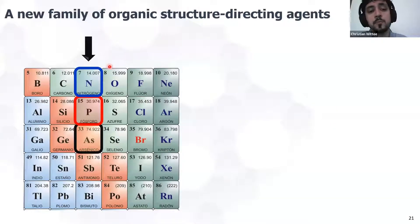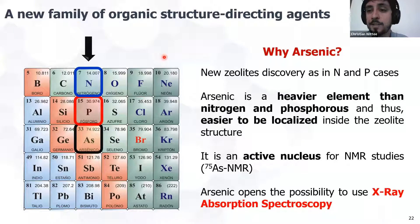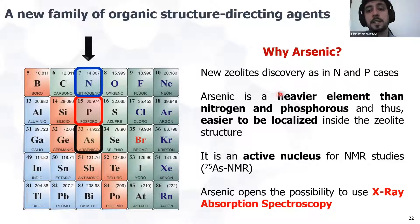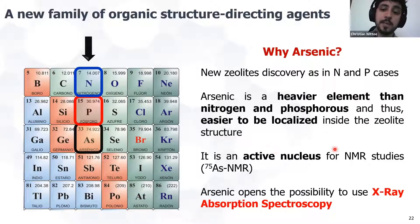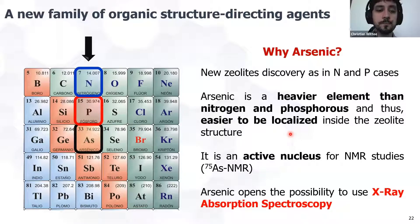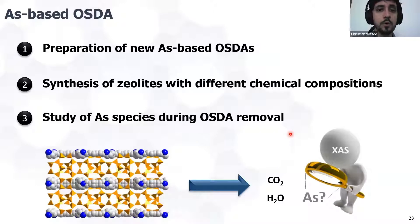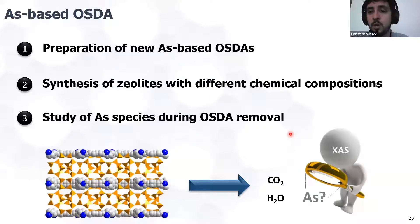We thought: if it's possible to synthesize with nitrogen and phosphorus, why not with arsenic? New zeolites could be discovered, as in the case of nitrogen and phosphorus. Arsenic is a heavier element, so we can localize the cation inside the zeolite structure. It is also an active nucleus for NMR studies, and it opens the possibility to use X-ray absorption spectroscopy to study the system during calcination and other treatments in situ. In this work, we prepared new arsenic-based OSDAs, synthesized zeolites with these cations, and studied the removal by calcination using in-situ X-ray absorption spectroscopy.